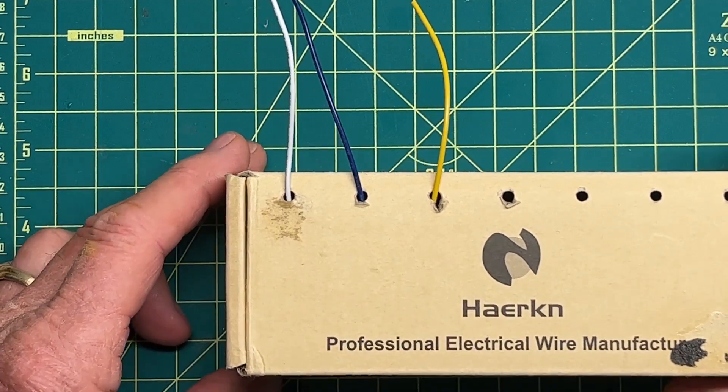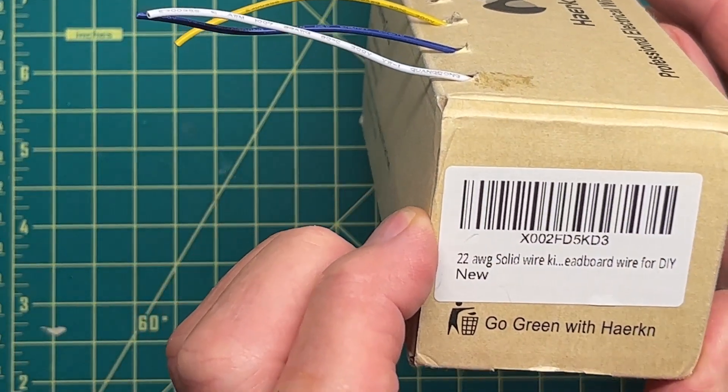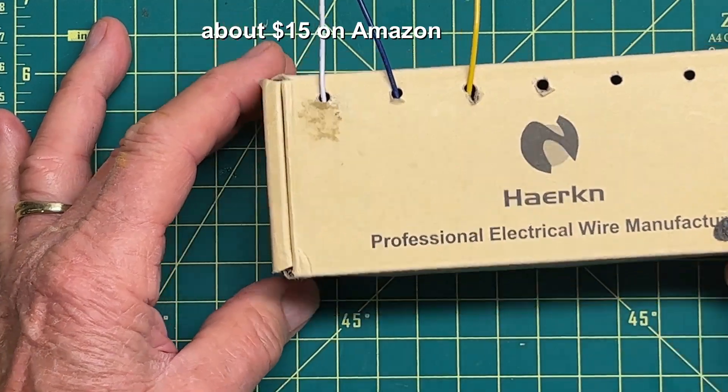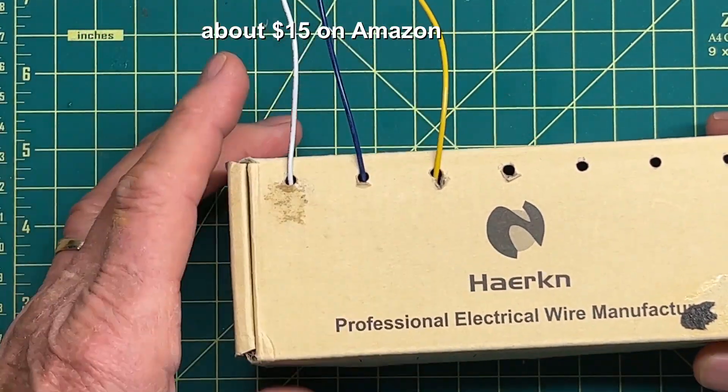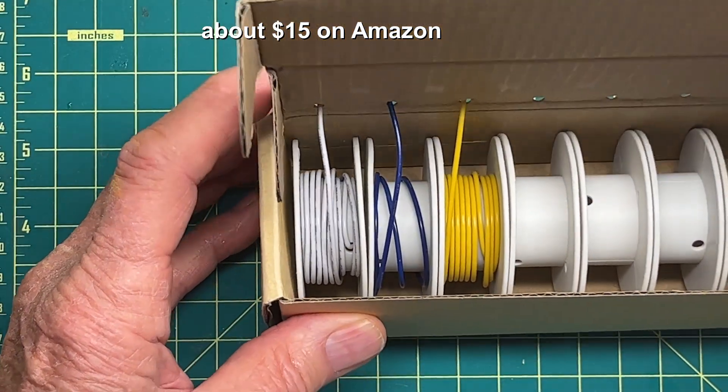So here's the sort of wire I use to wire up the leads to the track. It's a 22 gauge. I got a box of seven colors, and now I've only got three left, and the reels sit in this little box to make it handy to use.